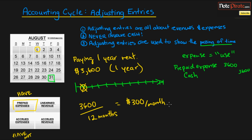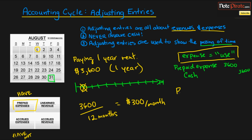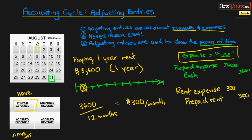The way we record our adjusting entry to show that we've used up a month is with an expense entry. This is not a revenue entry because we're not earning money — we're using up rent. Whenever we use something, we expense it. So we put down rent expense as our debit, since expenses are always debited when increasing. We then reduce our asset by crediting prepaid rent by $300 to show that one month of the asset has been used up. We put $300 on both the debit and credit side.